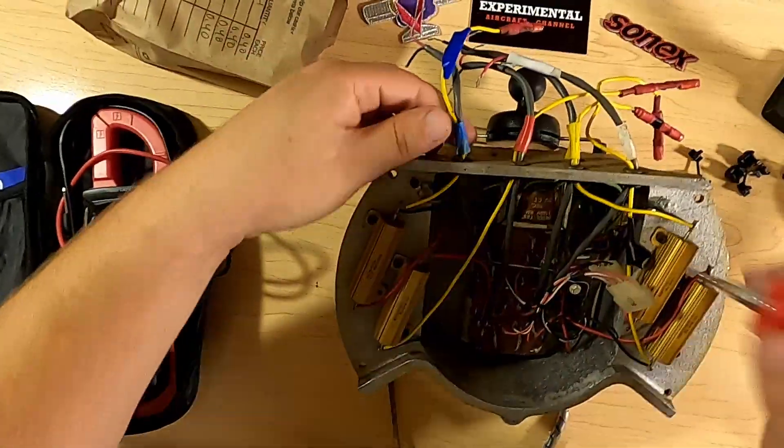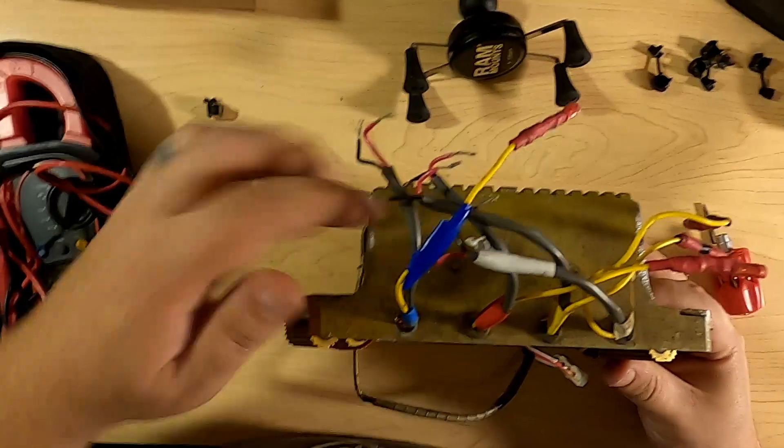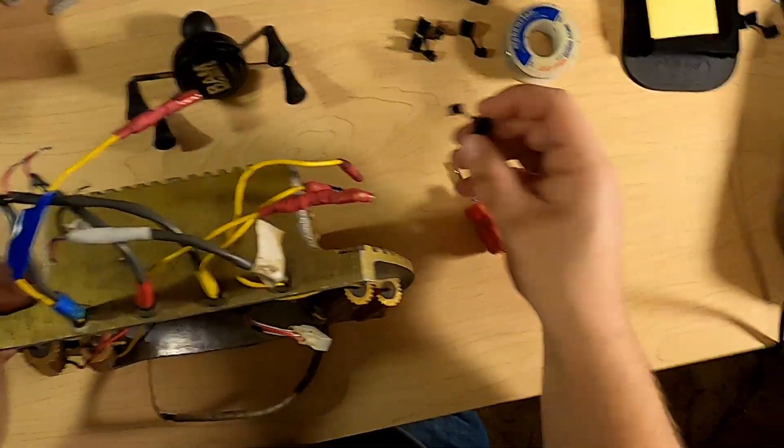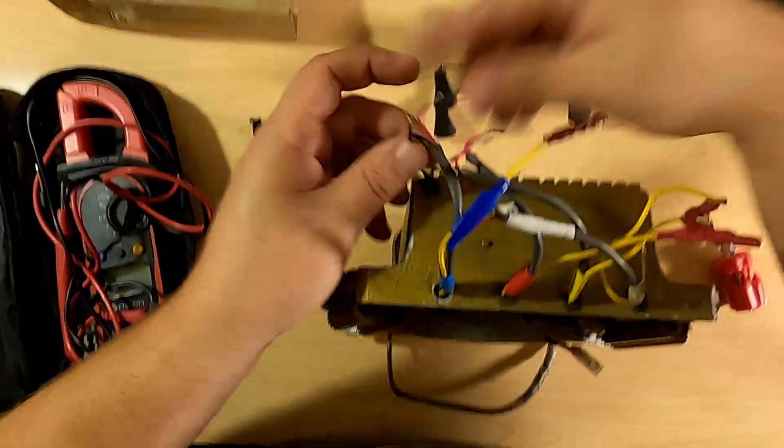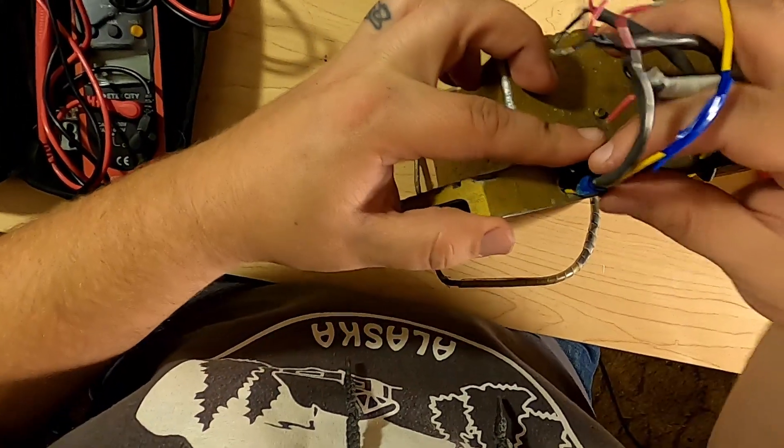Next step was to remove the rubber grommets from the top of the box. So now we can get an idea of how big that hole actually is. This is the smallest strain relief we have. And that one's too big. Poop.